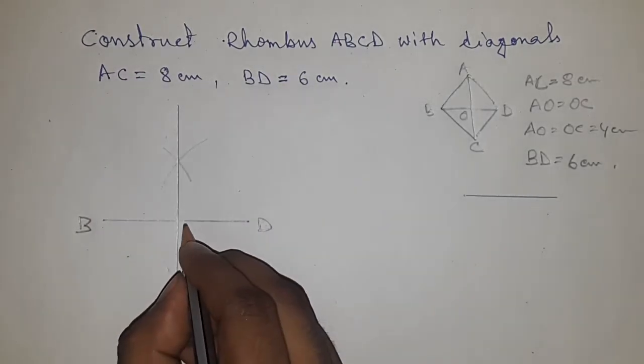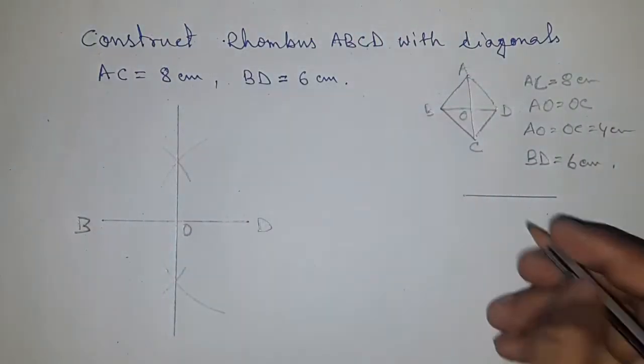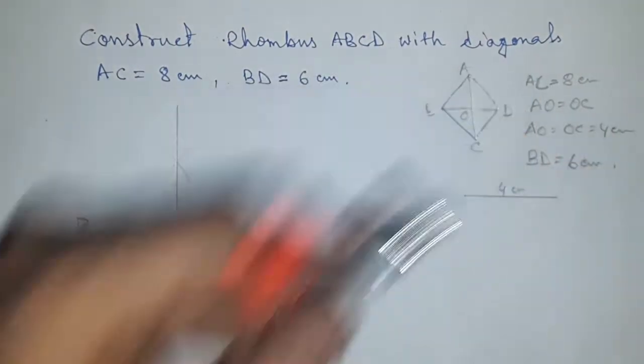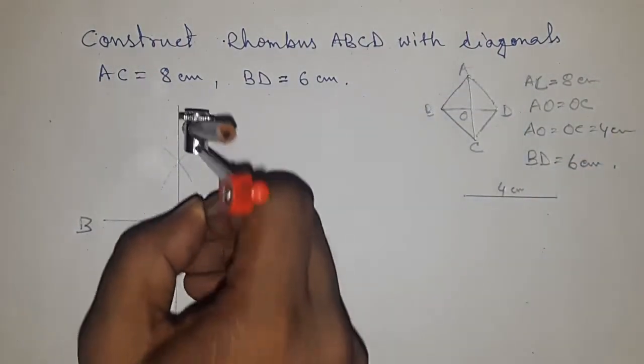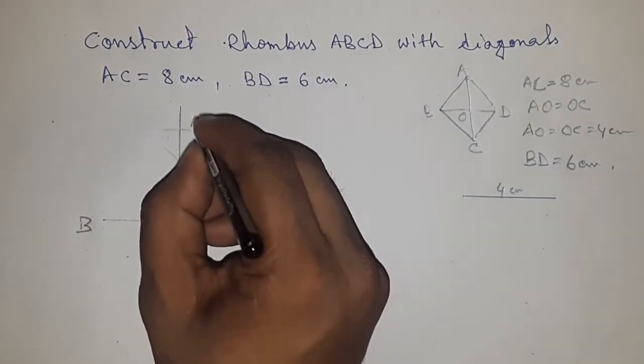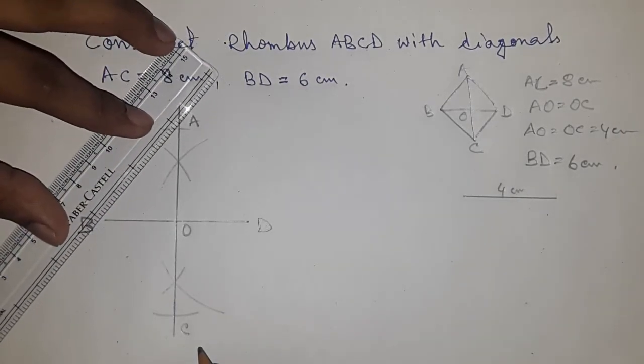So this bisects at point O. Now taking the length 4 centimeter. Cut the line here and cut the line here. So this is AC diagonal. Now have to join all the sides to get the rhombus.